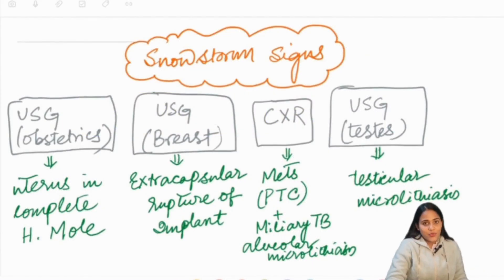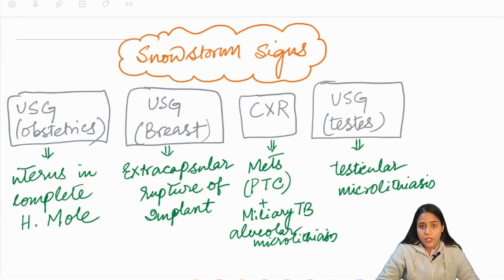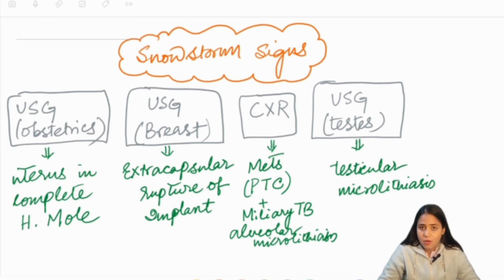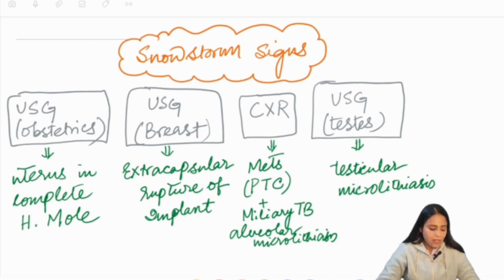Here we have the snowstorms in radiology. The most famous snowstorm is a USG-based obstetric finding in a complete hydatidiform mole. The second is a USG finding of the breast in a patient with extracapsular rupture of a silicone implant. The third is a chest X-ray appearance seen in miliary metastasis, usually from papillary thyroid carcinoma, though miliary TB and alveolar microlithiasis can also cause this. The last is a USG finding of the testis seen in testicular microlithiasis.